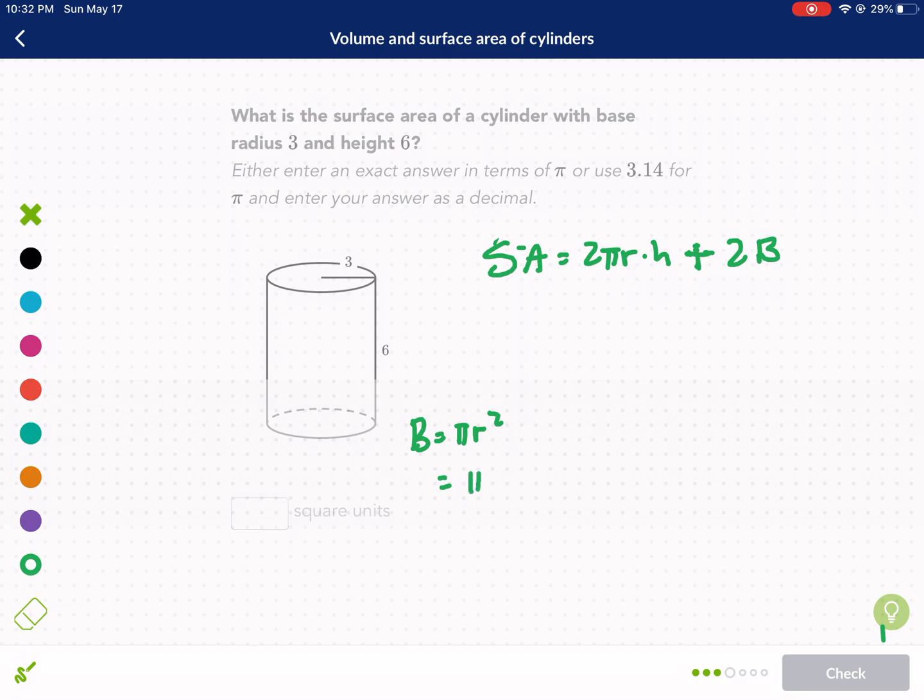So we have 9π times 2, and then we have 2π times 3 times our height, which is 6. We're going to add those two together, so that gives us 18—36π plus 18π.